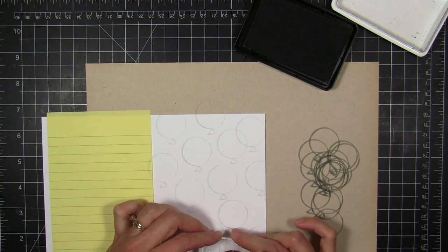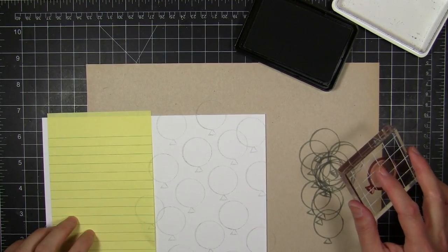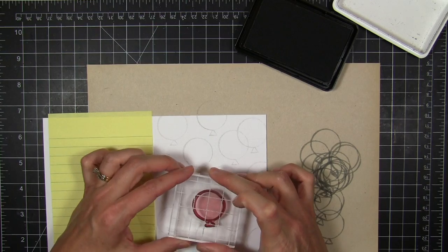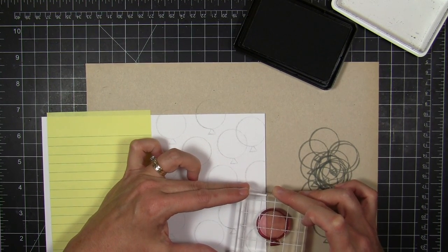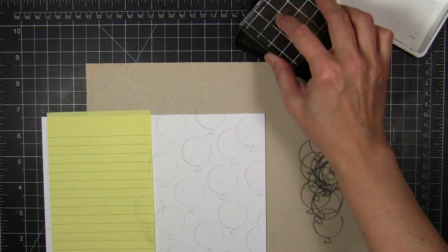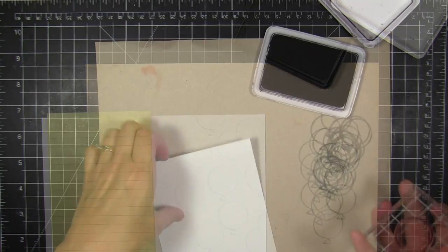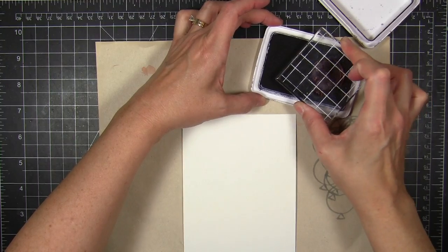I'm using Hero Arts shadow ink. This is the soft granite and I'm actually stamping it off and using a second generation impression to create a random background all over the front of the card. And there's no rhyme or reason to it. I just wanted to fill it up with these balloons and create a really nice subtle background for my card.